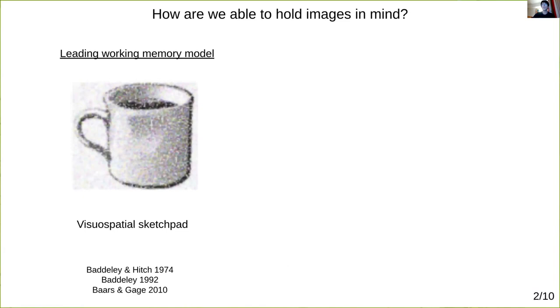So how are we able to hold images in mind once the objects are no longer in front of us? The leading model in psychology for image working memory is the visuospatial sketchpad, which says we scribble out information onto some kind of internal mental sketchpad which persists over seconds to minutes for us to later read out. It's not known how such a sketchpad could emerge from brain activity, however.